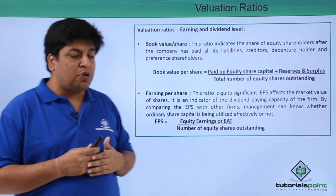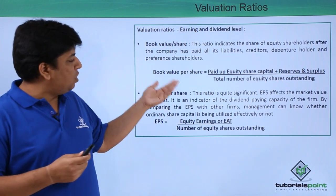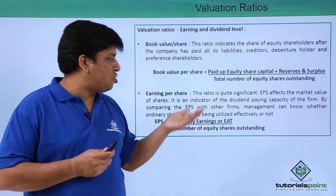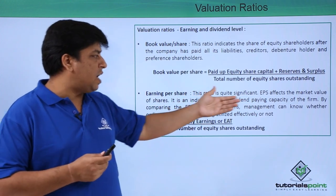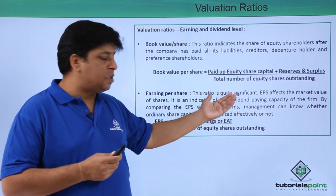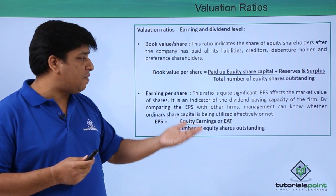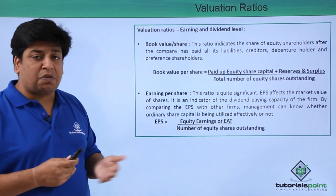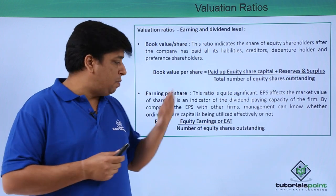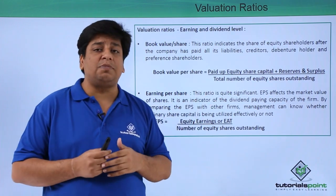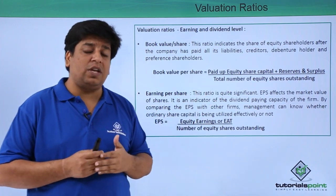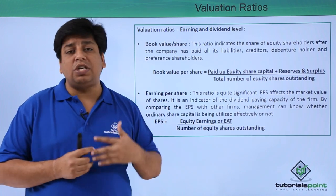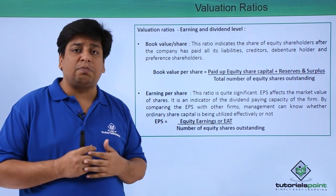The first one is book value per share. The formula uses paid-up equity share capital — we add the entire reserves and surplus plus retained earnings if any, and divide it by the total number of equity shares outstanding. Let's understand what outstanding equity shares means.